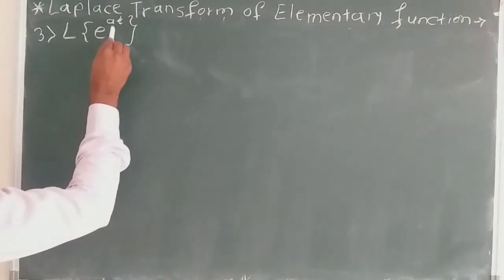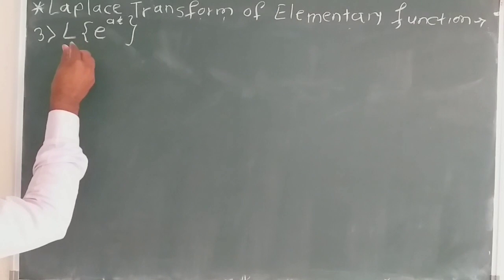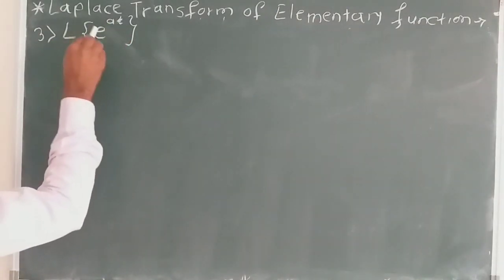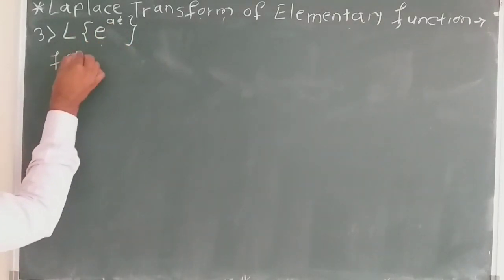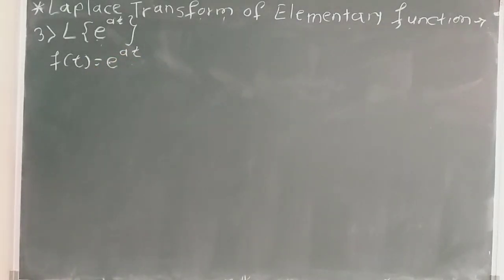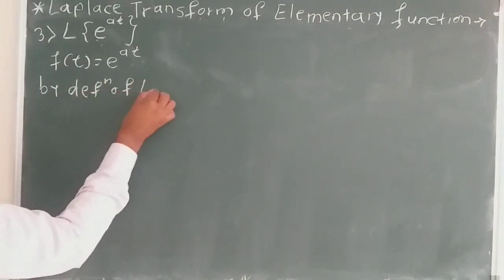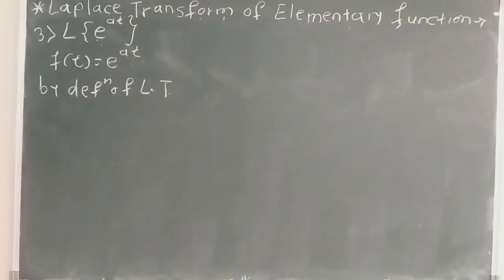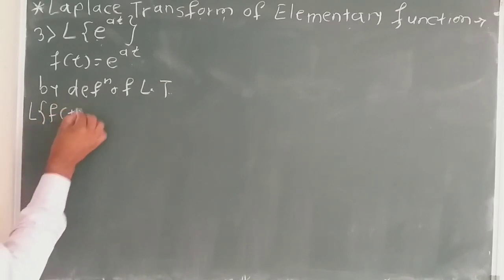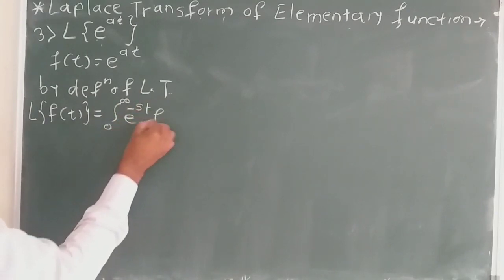Our third elementary function is the Laplace transform of e raised to at. We have to find the Laplace transform of e raised to at using the definition of Laplace transform. Comparing with the Laplace transform of f(t), we get f(t) equal to e raised to at. By definition, the Laplace transform of f(t) is equal to integration over 0 to infinity of e raised to minus st, f(t) dt.